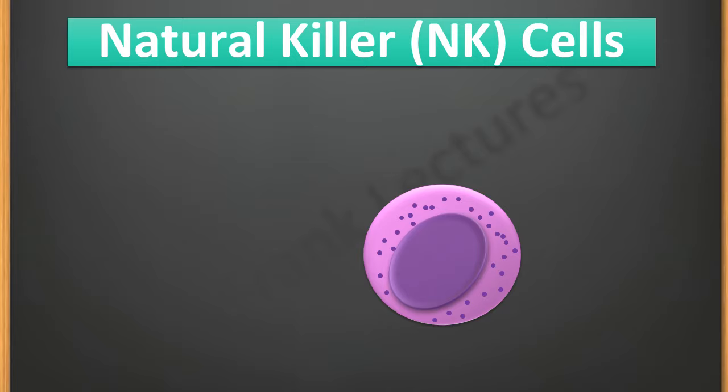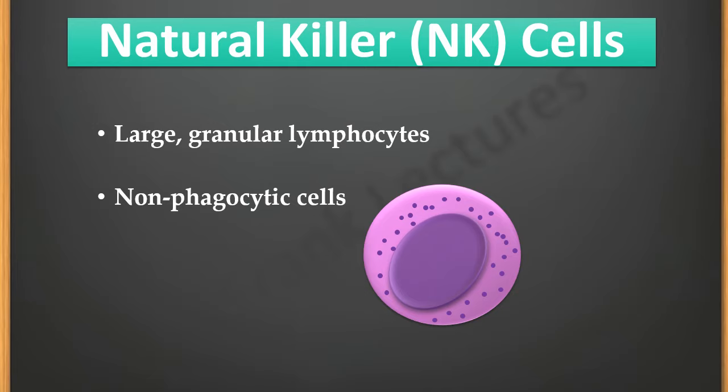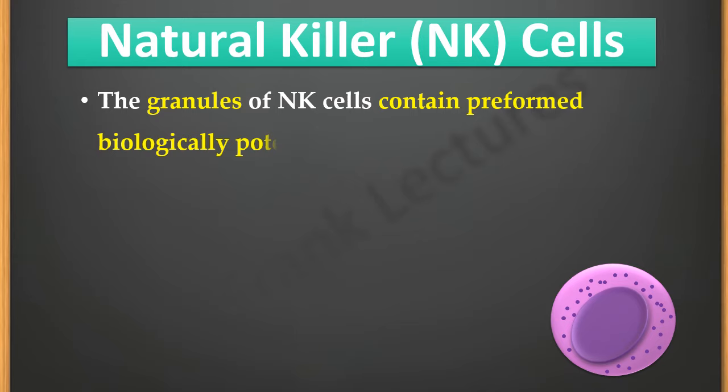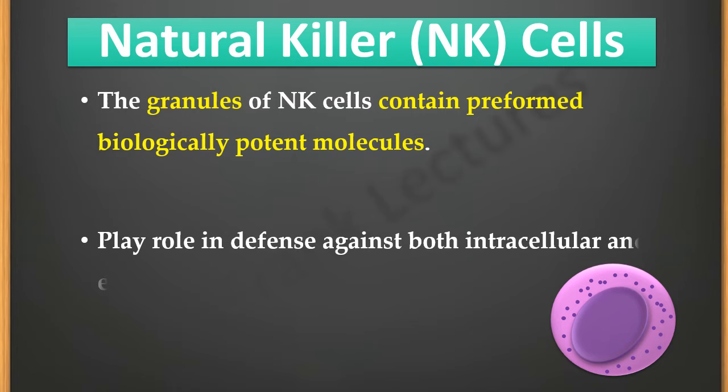Natural killer cells are large granular lymphocytes. They are non-phagocytic cells. The granules of NK cells contain preformed biologically potent molecules. Some of these molecules have the capability to form pores in the membrane of the target cell, resulting in the lysis of the cell, and some other molecules induce apoptosis of the target cell. NK cells play a role in defense against both intracellular and extracellular pathogens.